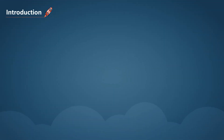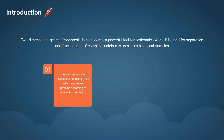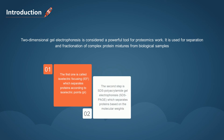Two-dimensional gel electrophoresis is considered a powerful tool for proteomics work. It is used for separation and fractionation of complex protein mixtures from biological samples. It separates proteins depending on two different steps: the first one is called isoelectric focusing, which separates proteins according to isoelectric points. The second step is SDS polyacrylamide gel electrophoresis, which separates proteins based on molecular weights.